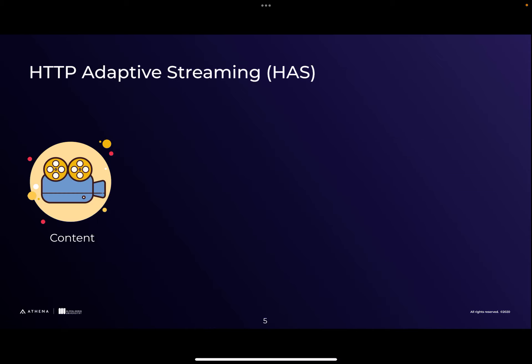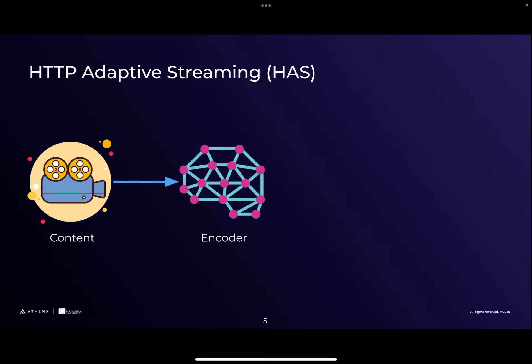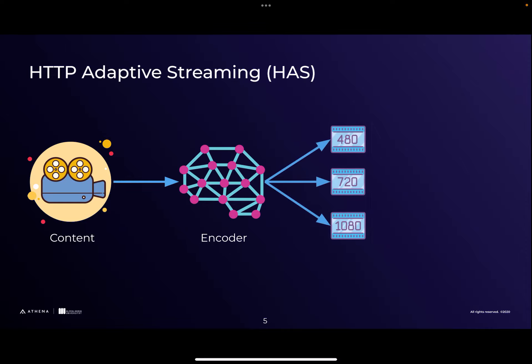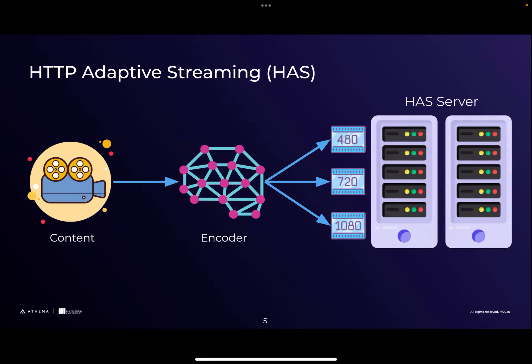You might ask how this video is delivered to mobile devices, and the de facto solution for this in the industry is HTTP Adaptive Streaming. In HAS, when we capture the content, we first send it to an encoder. The encoder compresses the video in different quality levels and different resolutions and stores them in the HTTP adaptive streaming server.